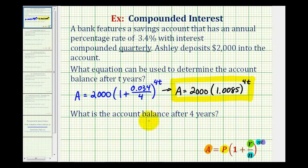So if we want to know the account balance after 4 years, we're just going to substitute 4 for T. So the amount of money in the account would be 2,000 times 1.0085 raised to the 4 times 4 power, so that would be the 16th power. Let's go ahead and determine this value. We'll round to the nearest cent.